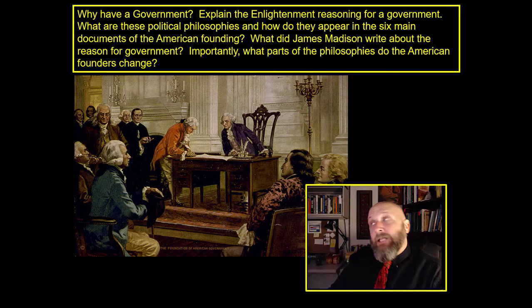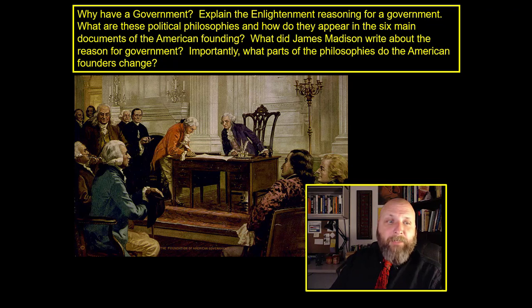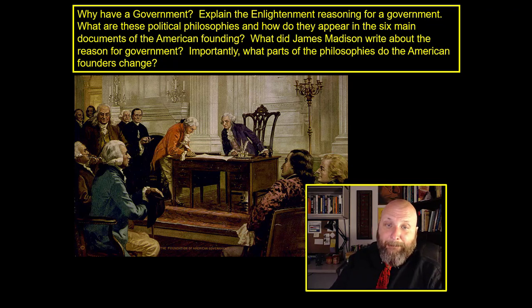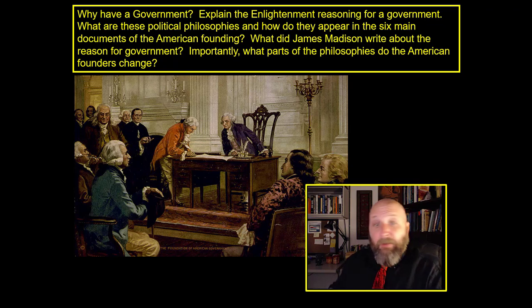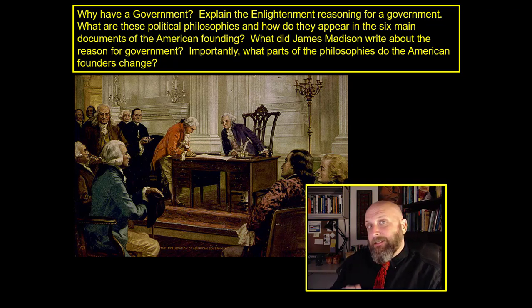In this class, this is all done in service of the question right above my head: Why do we have a government? Explain the Enlightenment reasoning for a government. What are these political philosophies? How do they appear in the six main documents of the American founding? What did James Madison write about the reason for government? And importantly, what parts of the philosophies do the American founders change?